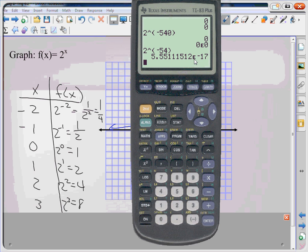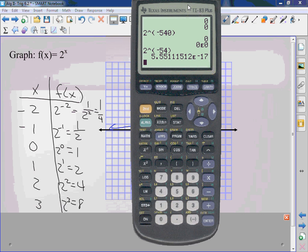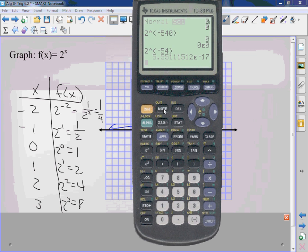Times 10 to the negative 17th. So you have to move at 17 decimal places to the left.